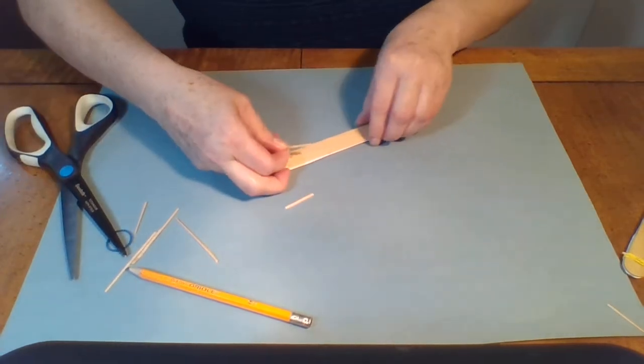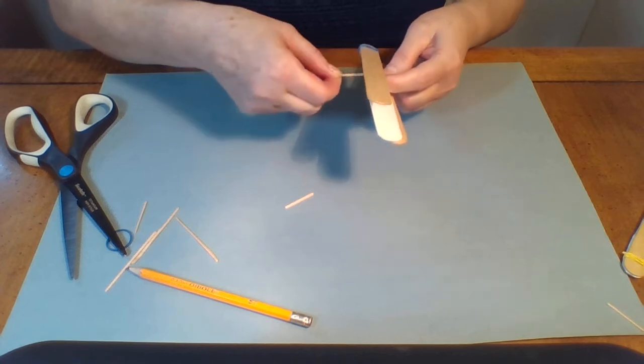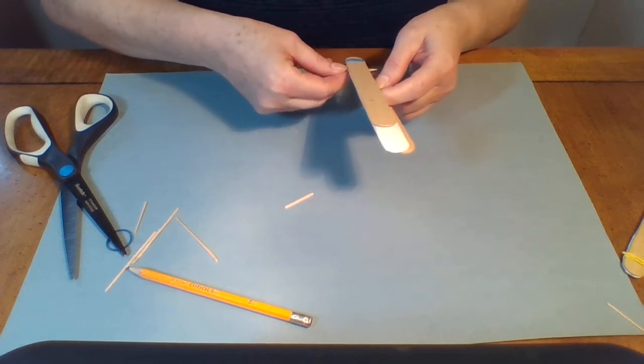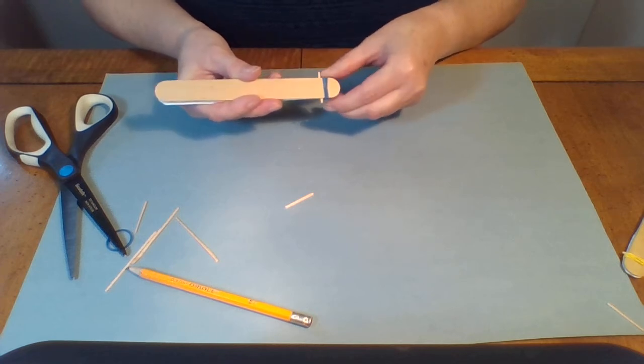Okay, so your next step is to place one of your toothpicks all the way down on top of the piece of paper next to the rubber band.